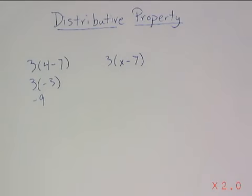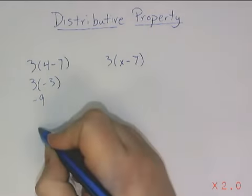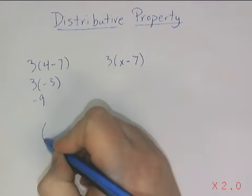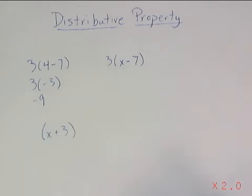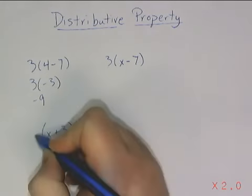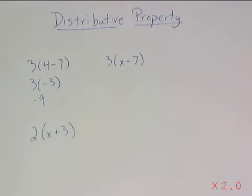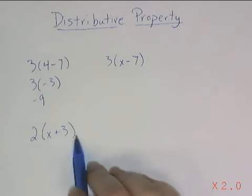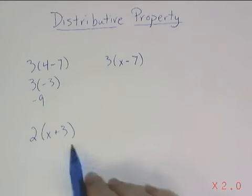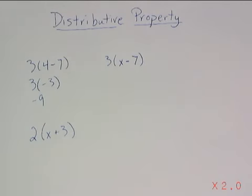First, a little visual. Let's see if I wanted to multiply the quantity x plus 3 times 2. Unless I know what x is, I can't actually do the work inside the grouping symbols first.